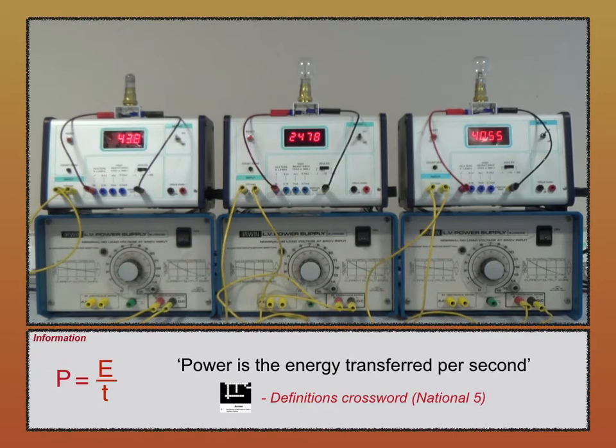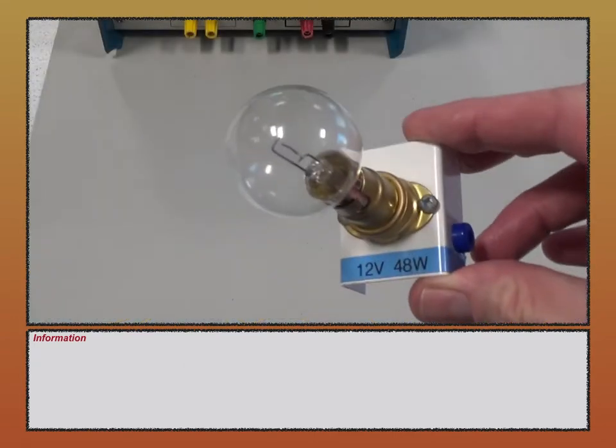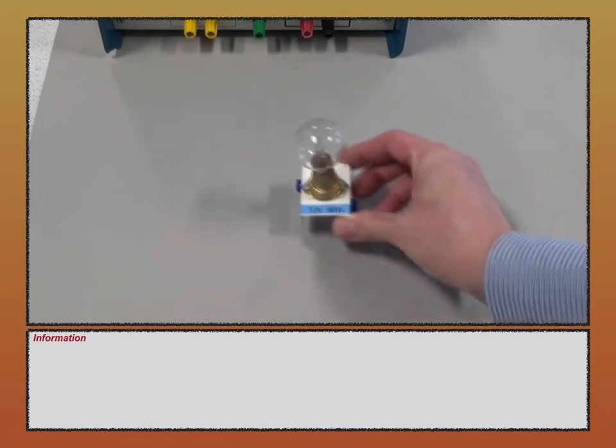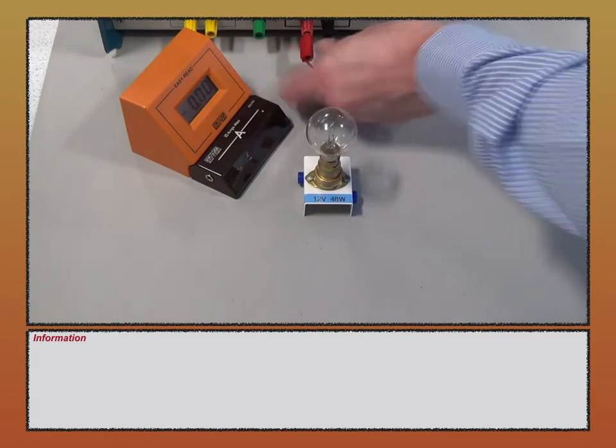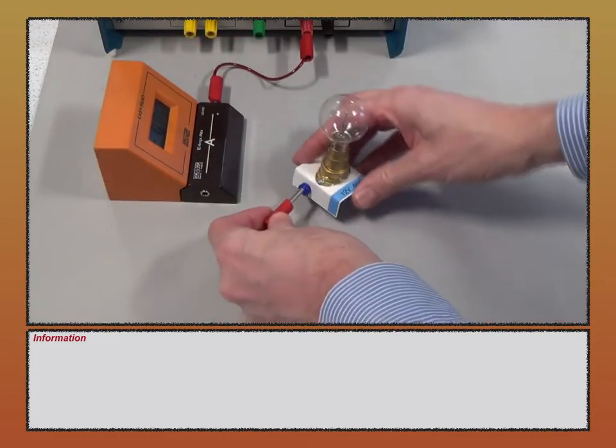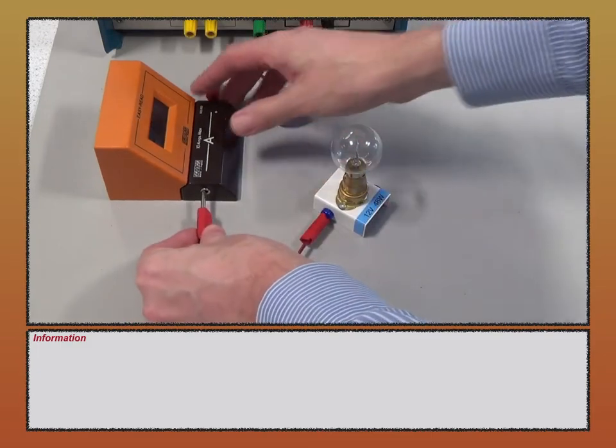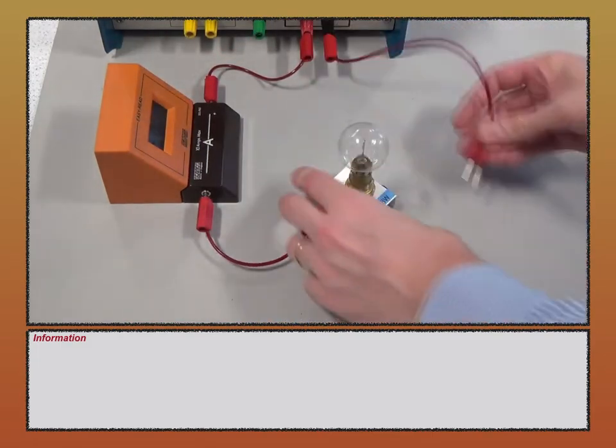Now we'll get on with the second experiment, where we'll learn the other three equations for electrical power. You'll see I'm using a lamp with a power rating of 48 watts this time. I'm going to place the lamp into an electrical circuit, then measure the current in the lamp and the voltage across it. Here I'm connecting the power supply to the ammeter, the ammeter to the lamp, and then the lamp back to the power supply. Since I'm measuring the current in the lamp, the ammeter must be placed in series with it.